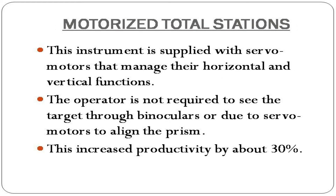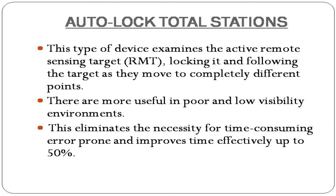Motorized Total Stations are supplied with servo motors that manage their horizontal and vertical functions. The operator is not required to sight the target through binoculars, as servo motors align the prism automatically. This increases productivity by about 30%.